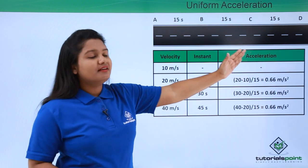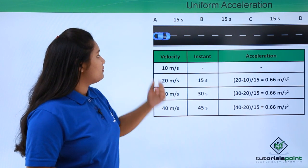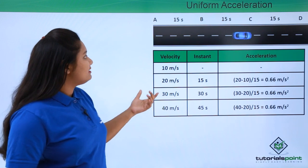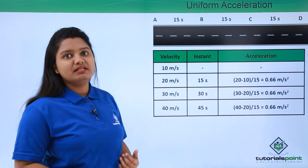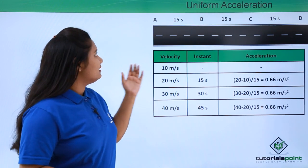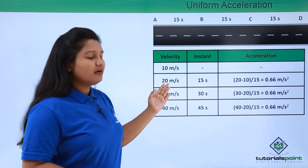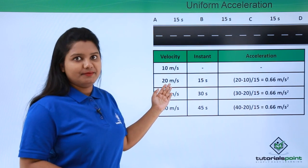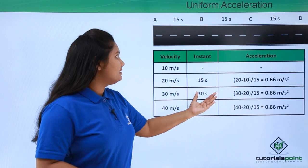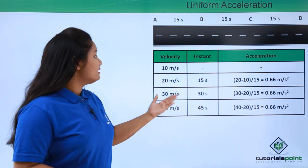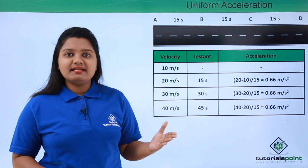Now with this knowledge, let us move on to a situation. Let's say there is a straight road and a car starts from point A where the velocity is 10 meters per second. By the time it reaches point B after 15 seconds, its velocity becomes 20 meters per second. After another 15 seconds at point C, its velocity was 30 meters per second.